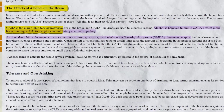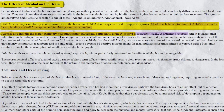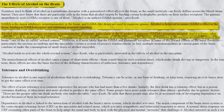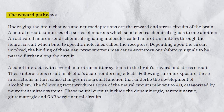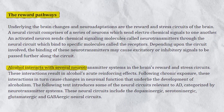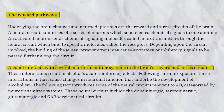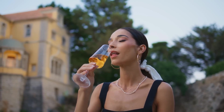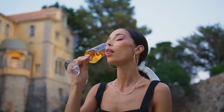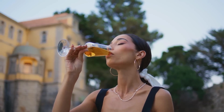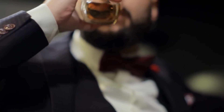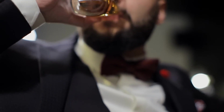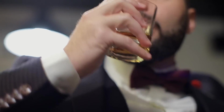Simultaneously, alcohol inhibits the action of glutamate, an excitatory neurotransmitter, leading to impairments in cognitive function, memory, and motor skills. Alcohol also increases dopamine levels in the brain's reward system, which can create feelings of pleasure and reinforce the desire to drink. This is one of the many reasons why alcohol can become addictive in some individuals.